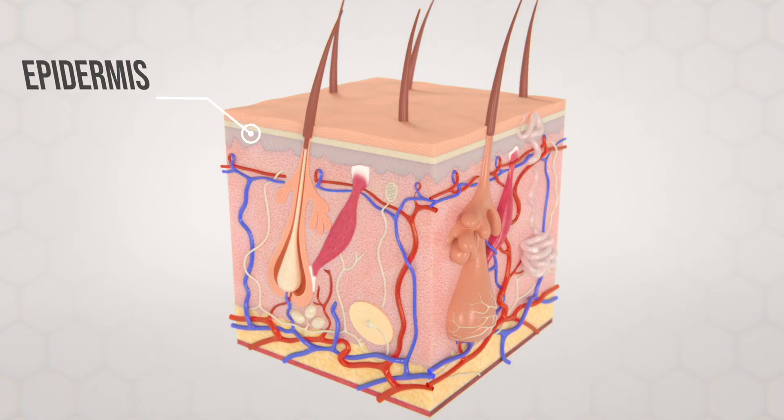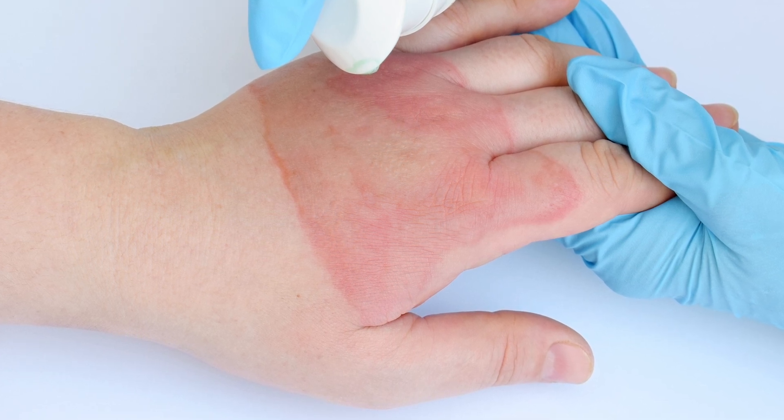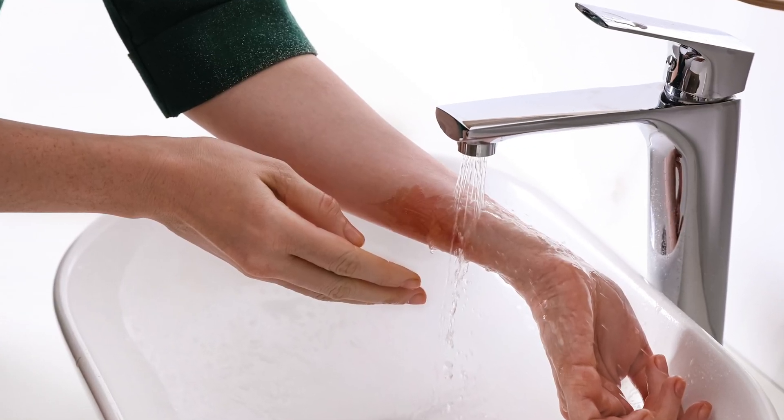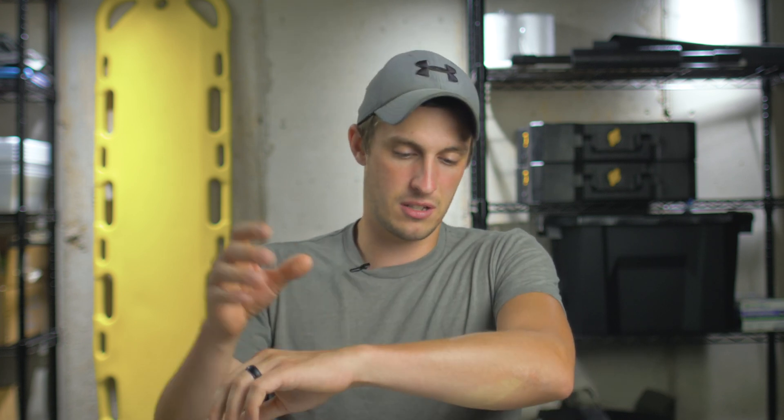For a minor burn — someone touched the stove or burned themselves at a campfire — it should present as a bright red area. It's going to be very painful. The nerve endings on top of the skin have been damaged, but the skin should still be intact, with a lower chance of infection. There should be no blisters; blisters mean the dermis is involved, making it a second-degree or partial-thickness burn. First, stop the burning process — for a thermal burn, cool it under clean water for 5 to 10 minutes to pull that heat out.